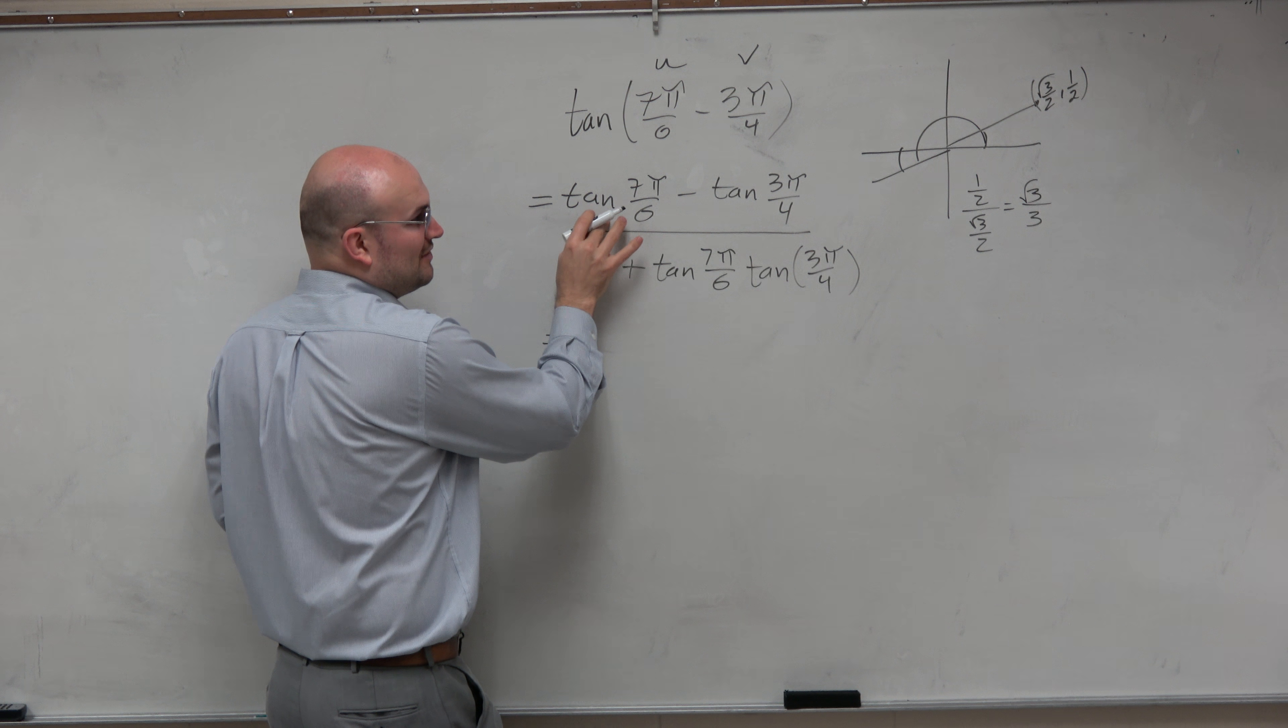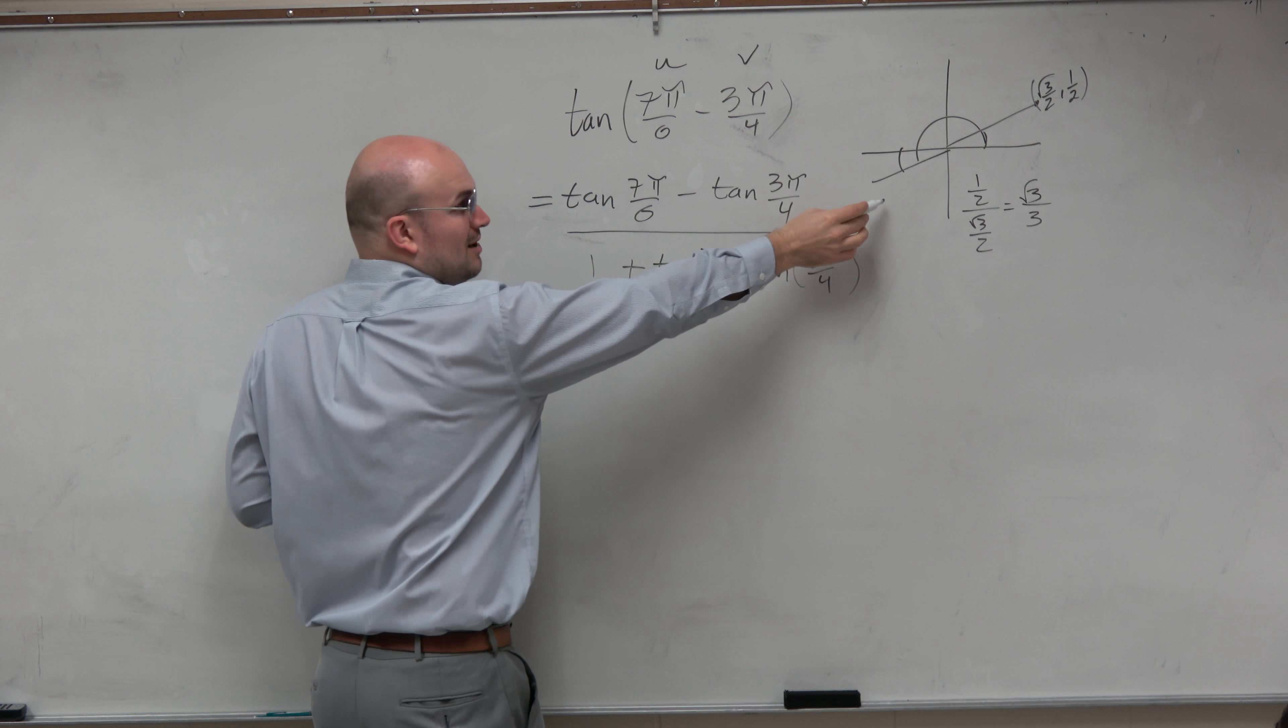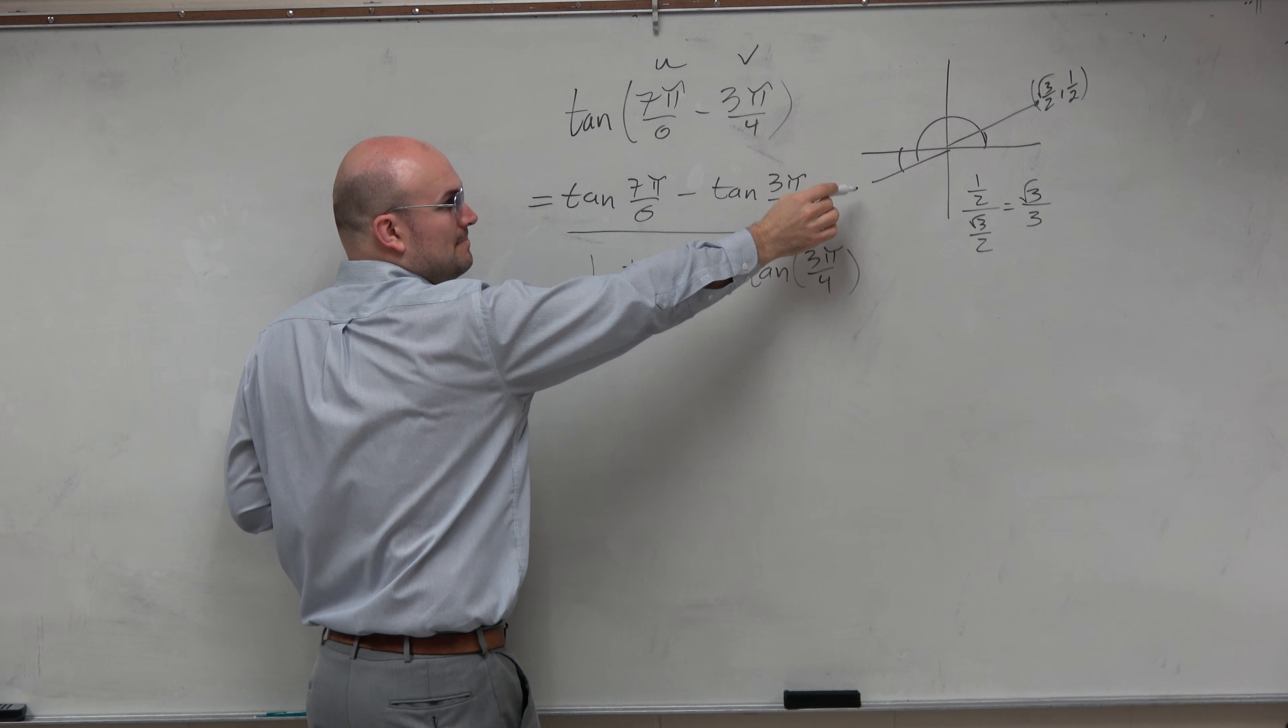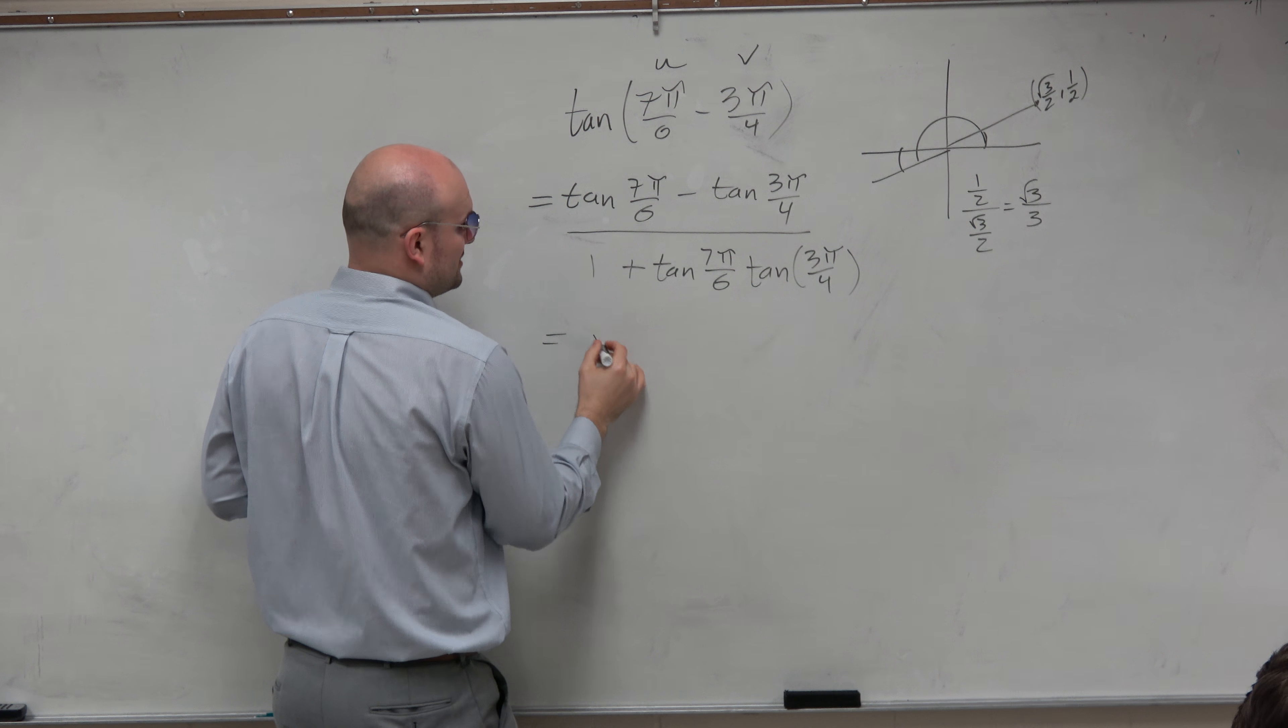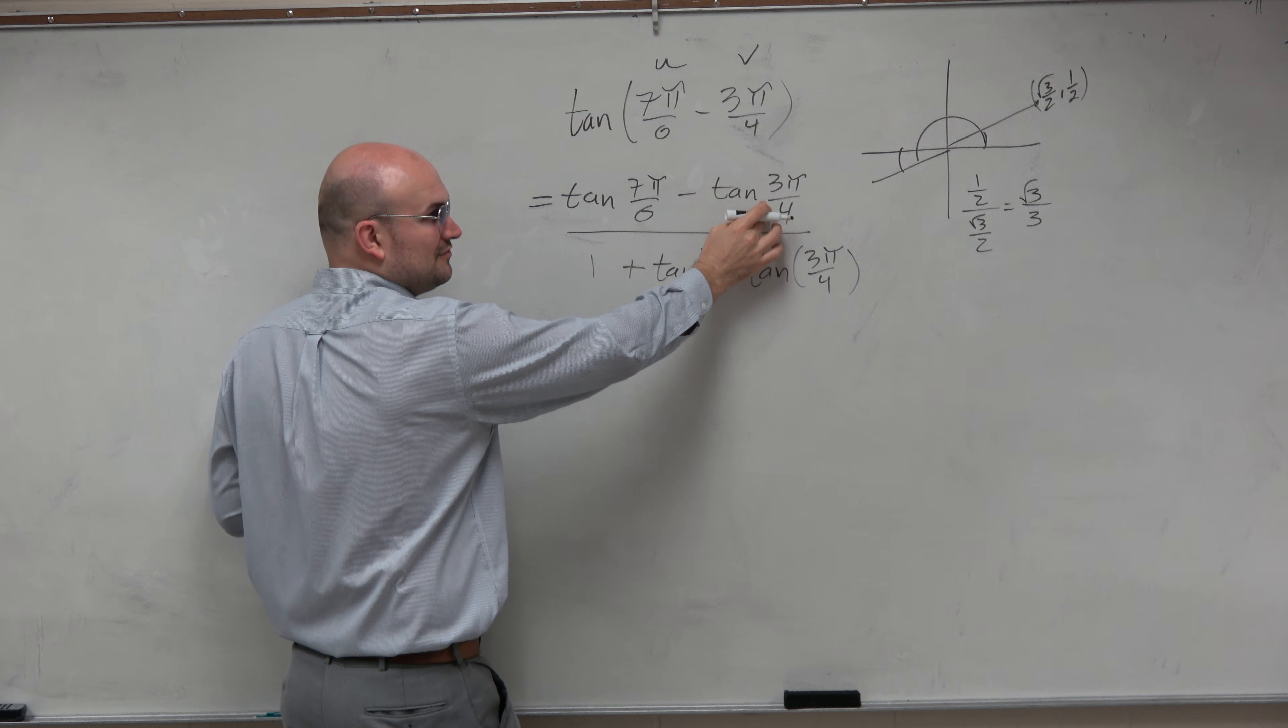So tangent, however, is in which quadrants? Tangent of 7π over 6 is in which quadrant? Third quadrant. So therefore, it is positive. So therefore, I have square root of 3 over 3 minus tangent of 3π over 4.